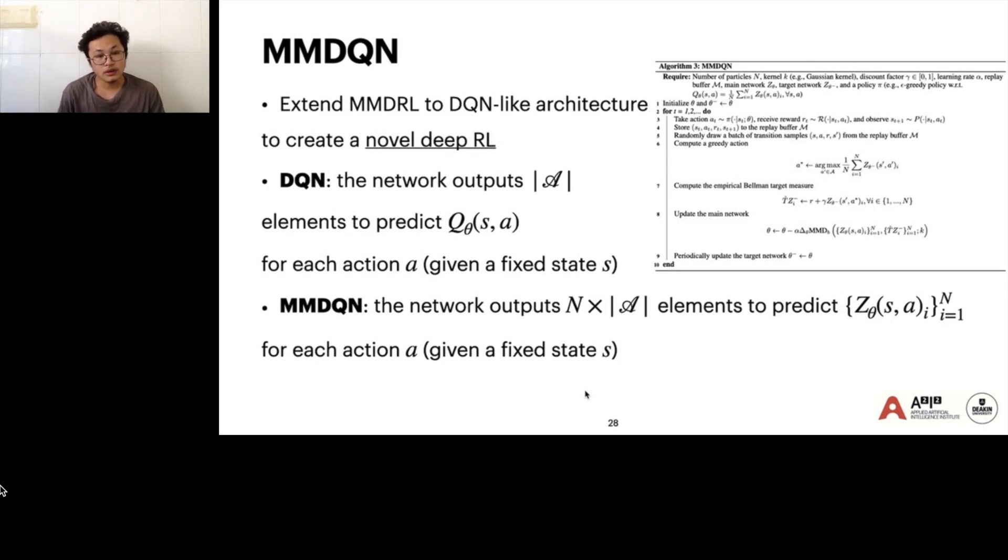Our algorithm can be easily extended to DQN-like architecture to create a novel deep algorithm. Basically we just use the architecture similar to DQN with the output of N times |A| elements to predict N pseudo-samples for each state-action pair's return distribution.